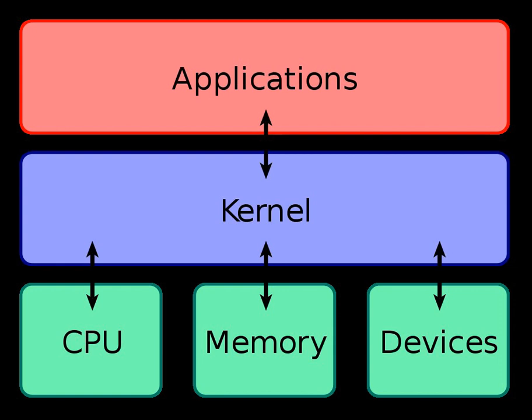A monolithic kernel is one single program that contains all of the code necessary to perform every kernel-related task. Every part to be accessed by most programs — device drivers, scheduler, memory handling, file systems, network stacks — is in kernel space. Many system calls are provided to applications to allow them to access all those services. A monolithic kernel, while initially loaded with subsystems that may not be needed, can be tuned to a point where it is as fast as or faster than one specifically designed for the hardware.